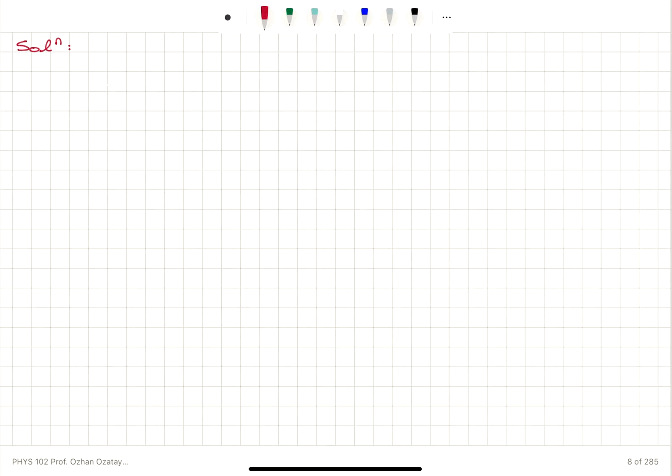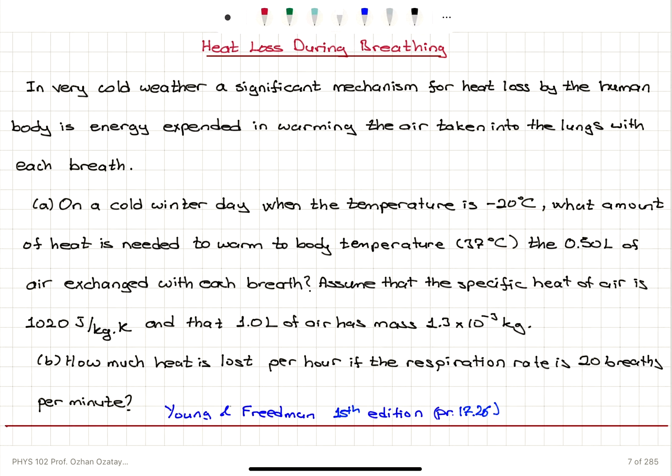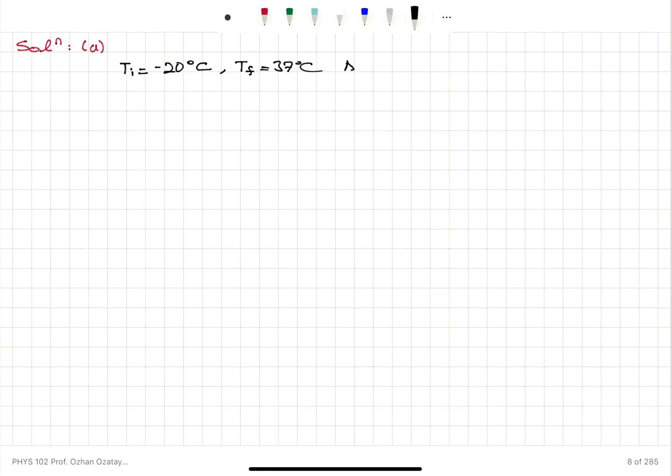We are warming up air from an initial temperature of minus 20 degrees Celsius to a final temperature of 37 degrees Celsius. So the change in temperature, delta T, is T final minus T initial, which is 37 minus minus 20, that is 57 degrees Celsius temperature change. Since the temperature change in the Kelvin scale equals the temperature change in the Celsius scale, delta T is 57 Kelvin.